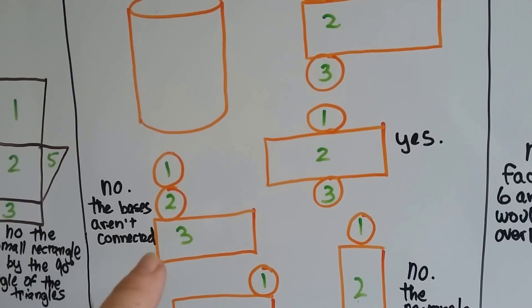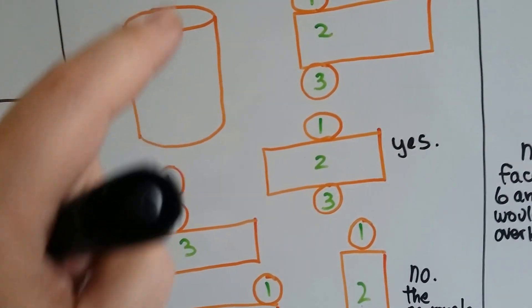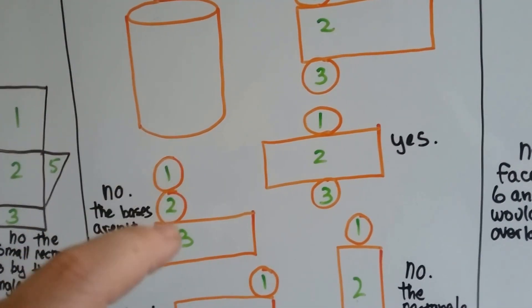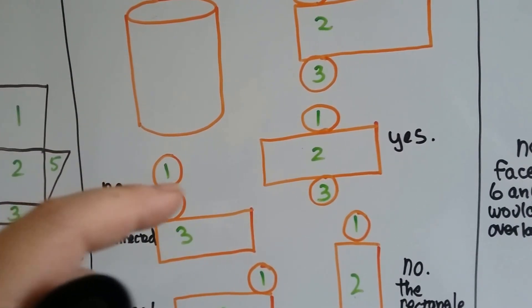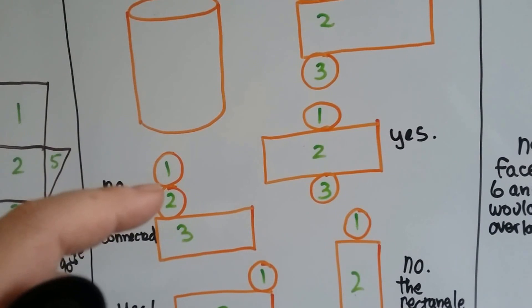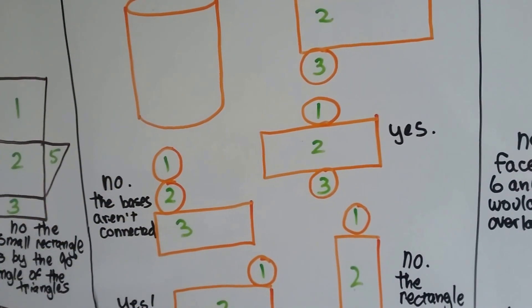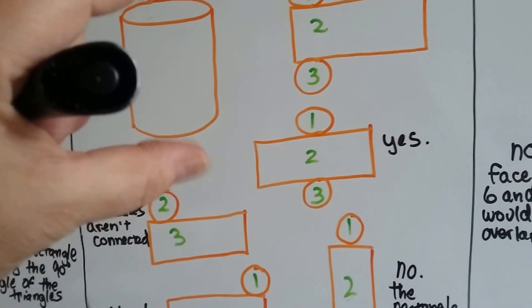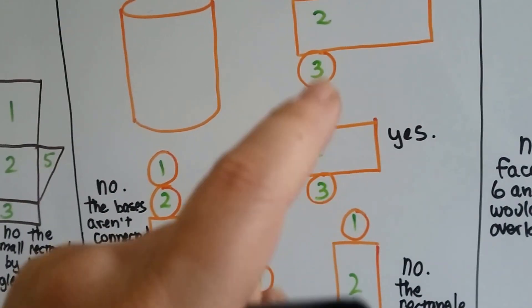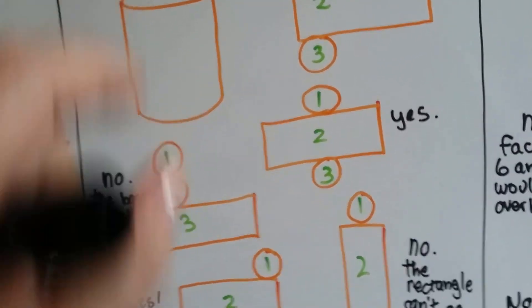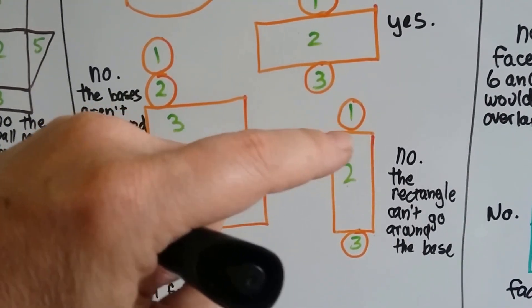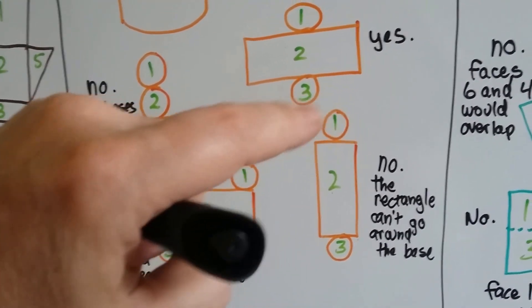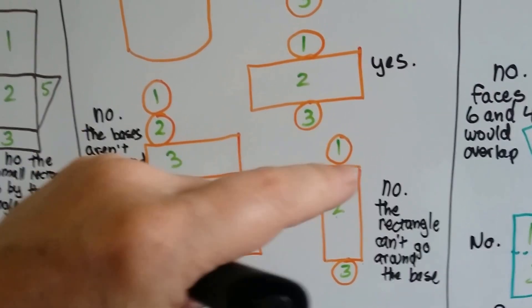But this one, no. The bases are not connected to each other. So if you saw this, this would not be correct. If you folded this right in between one and two and it came over, these two don't touch each other. They're separated like this between the rectangle. How about this one? No. The rectangle wouldn't be able to wrap around the circle, the base.